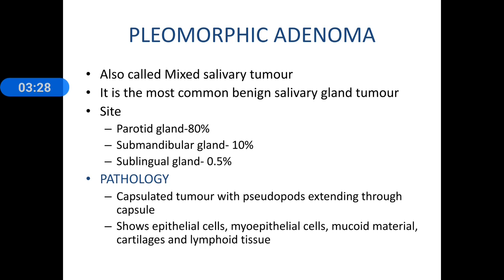Pleomorphic adenoma is also called mixed salivary tumour. It is the most common benign salivary gland tumour. Site-wise, in 80–90% of cases it involves the parotid gland; in 10% of cases it can be the submandibular gland; and in around 0.5% it can be the sublingual gland. Pathologically, it is a capsulated tumour with pseudopods extending through the capsule. Histology reveals multiple tissue types — epithelial cells, myoepithelial cells, mucoid material, cartilage, and lymphoid tissue — hence the name pleomorphic adenoma.